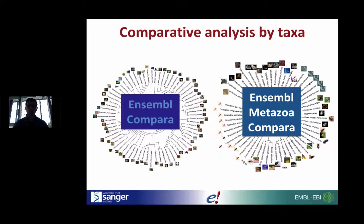Within Ensembl and Ensembl Genomes, we perform our comparative analyses by taxa. We perform analyses on all vertebrates in Ensembl, and also for each Ensembl Genomes taxa — so we have a metazoa comparer, a protist comparer, a fungi comparer, and so on.